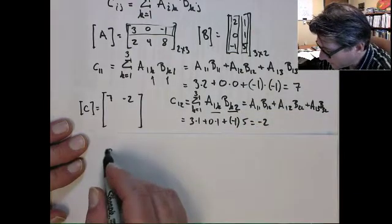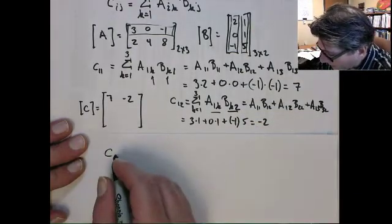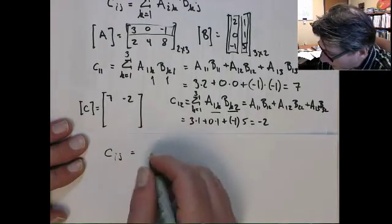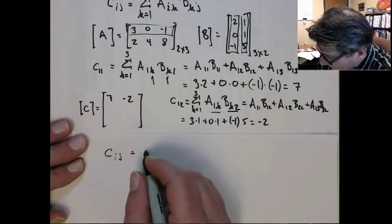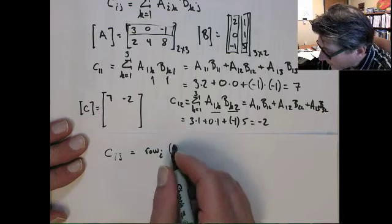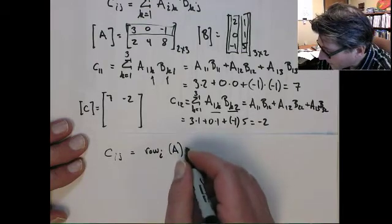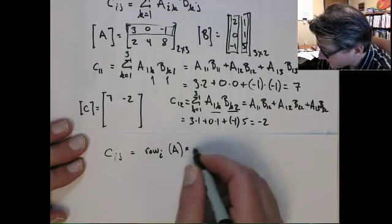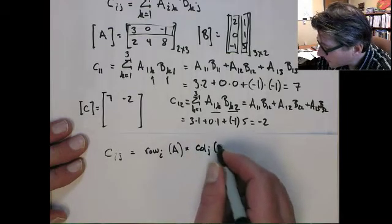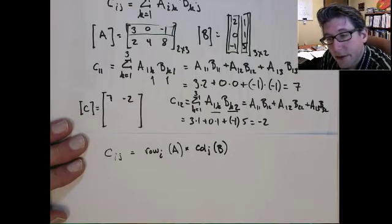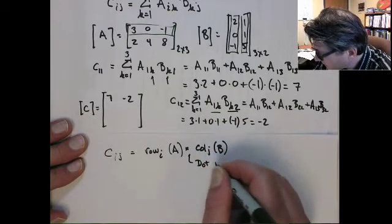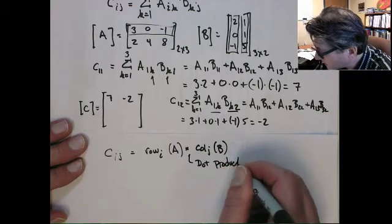So in general, really, if you're looking at getting the ij value of C, it's really going to be the row i of A multiplied with, or I should say dotted with, column j of matrix B. So this is like a dot product.